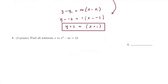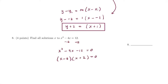Here's problem 8 — solving another quadratic. Set it to zero by subtracting 12 from both sides: x squared minus 4x minus 12 equals zero. Factor this: (x − 6)(x + 2) equals zero. Setting each factor to zero gives x equals 6 and x equals negative 2. Those are the two solutions.